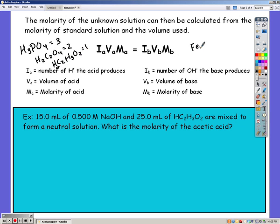Ib is the number of hydroxide ions the base produces. So iron 3 hydroxide would have an Ib of 3, while magnesium hydroxide would have an Ib of 2, and sodium hydroxide would have an Ib of 1.